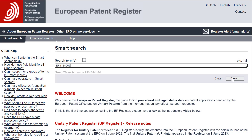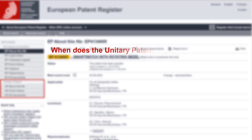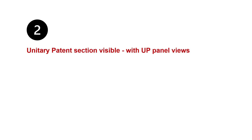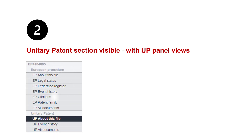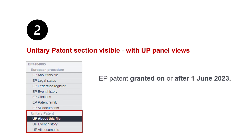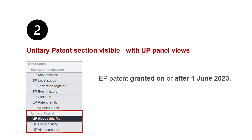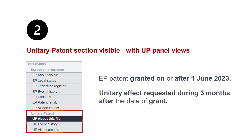Now, you may be wondering when the Unitary Patent Register with the UP Panel Views appears. Let's move to the second scenario: Unitary Patent Register visible with UP Panel Views. For European patents granted on or after the 1st of June 2023, the Unitary Patent section is visible and active, including the corresponding UP Panel Views — UP About This File, UP Event History, and UP Old Documents — provided the unitary effect is requested during the first three months after the date of grant.